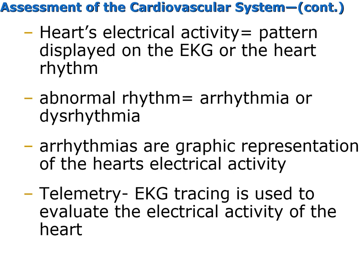The heart's electrical activity is the pattern displayed on the EKG or the heart rhythm. An abnormal rhythm is called an arrhythmia or dysrhythmia. Telemetry is used to record that activity. An EKG or ECG tracing is used to evaluate the electrical activity of the heart. The period of contraction while the heart pumps blood into circulation is called systole. The period of relaxation as the chambers fill with blood is called diastole.